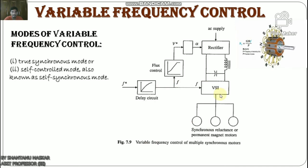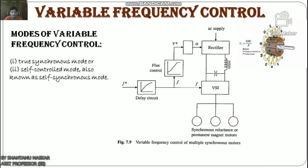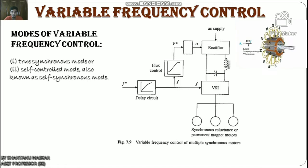There are two modes of variable frequency control of multiple synchronous motors: one is true synchronous mode, and two is self-control mode, also known as self-synchronous mode. In true synchronous mode, the stator supply frequency is controlled from an independent oscillator; the frequency is changed gradually from its initial to the desired value so that the difference between synchronous speed and rotor speed is always small. This allows rotor speed to track the change in synchronous speed, and when the desired frequency is reached, the rotor pulls into step after hunting oscillation.